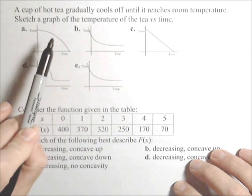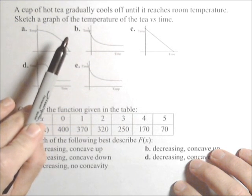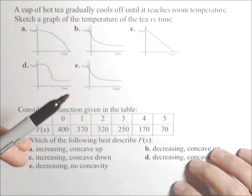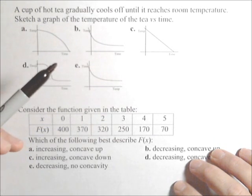So we want to plot tea versus time. As time goes up, the temperature cools off, and then it reaches room temperature. So let's talk about these graphs.